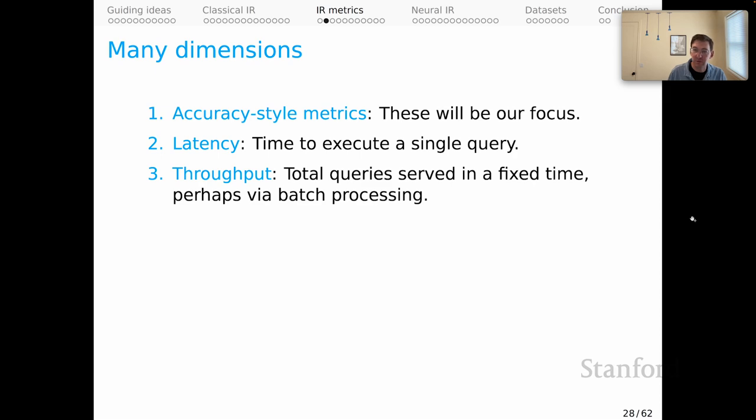Throughput is similar. Throughput is the total queries served in a fixed time, maybe via batch processing. That's related to latency, but it could trade off against latency. You might decide to sacrifice some per query speed in order to process batches of examples efficiently. And so whether you favor latency or throughput might depend on how users interact with your system.